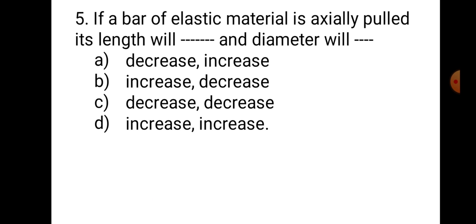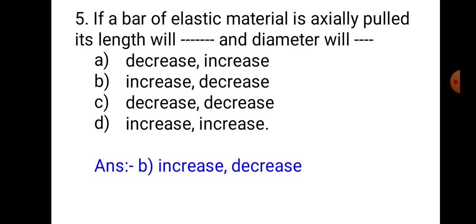Question number 5: If a bar of elastic material is axially pulled, its length will __ and diameter will __. A. Decrease, increase. B. Increase, decrease. In this problem, the bar is pulled. Therefore, its length will increase and diameter will decrease. Hence, the correct answer is B. Increase and decrease.